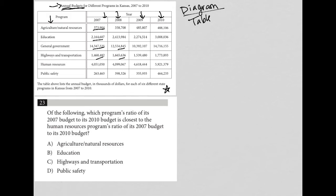any information that's beneath the table. So in this case, it says the table above lists the annual budget in thousands of dollars for each of six different state programs in Kansas from 2007 to 2010. So now I feel pretty good about understanding what's in this table.